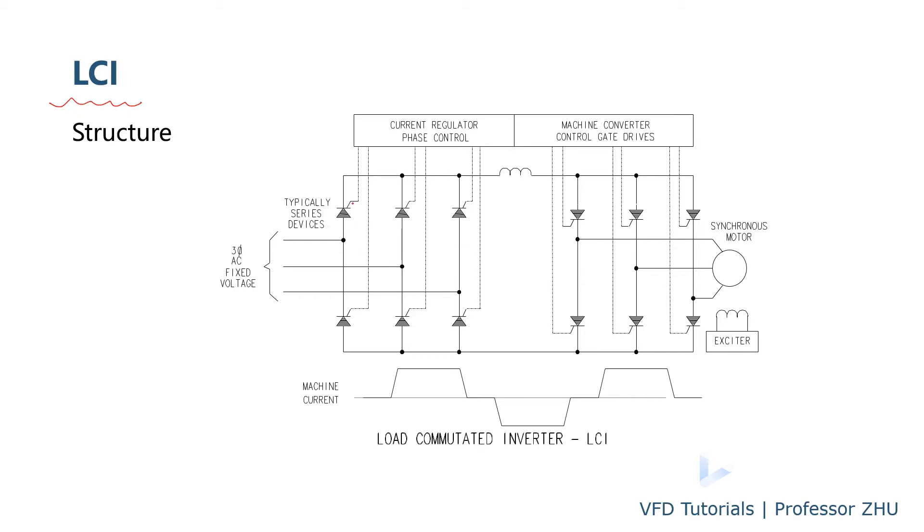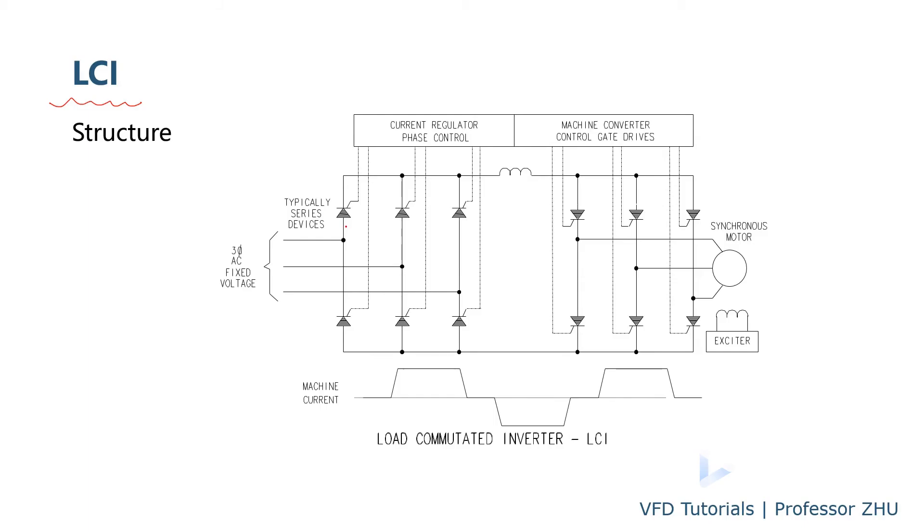This is why we call the load commutated inverter. They use the load, the synchronous motor, to do the commutation. You cannot use induction motor for this kind of drive topology because you need the current leading the voltage on the motor side. On the rectifier side, also use the SCR. So the power factor will be very low at the low power output.